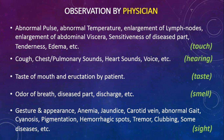Observation by physician through all five senses, according to allied subjects: abnormal pulse, abnormal temperature, enlargement of lymph nodes, enlargement of abdominal viscera, sensitiveness of disease part, tenderness, edema — by touch; cough, chest, pulmonary sound, heart sound, voice — by hearing; taste of mouth and eructation by patient — by taste; odor of breath, disease part, discharge — by smell; gesture and appearance, anemia, jaundice, carotid vein, abnormal gait, cyanosis, pigmentation, hemorrhagic spot, tremor, clubbing — by sight.